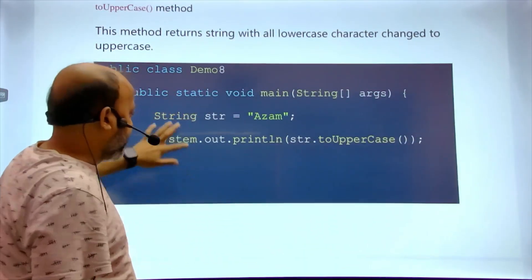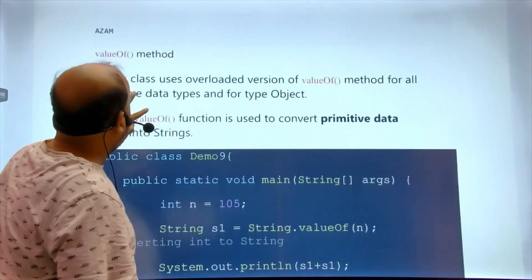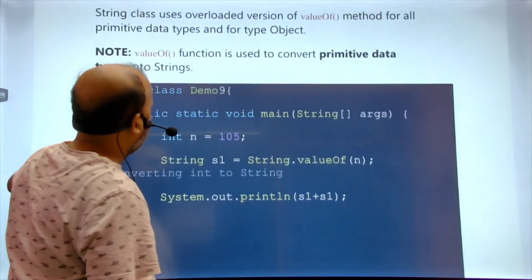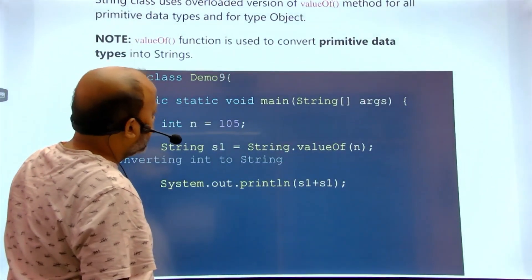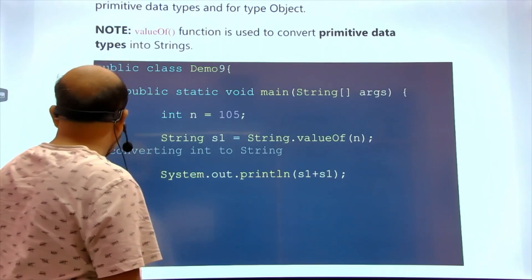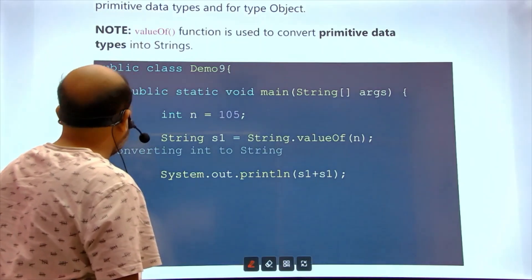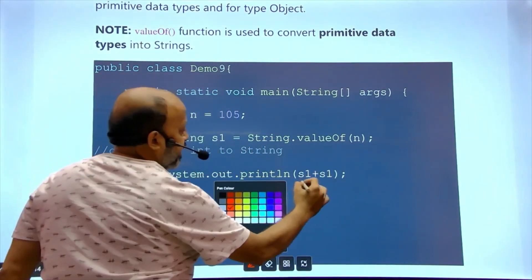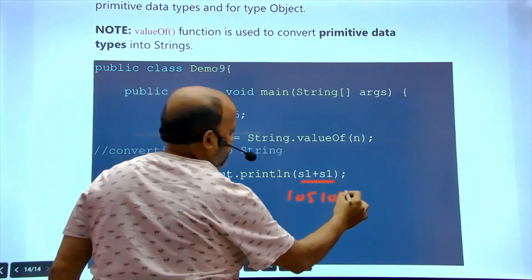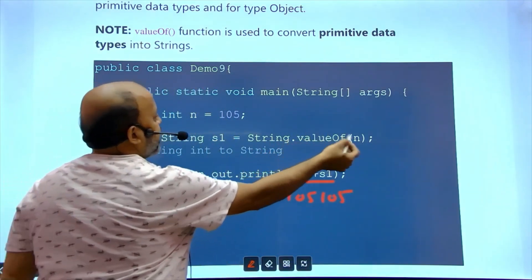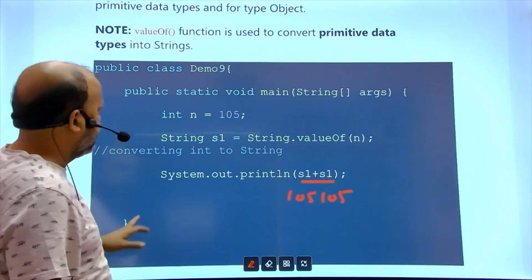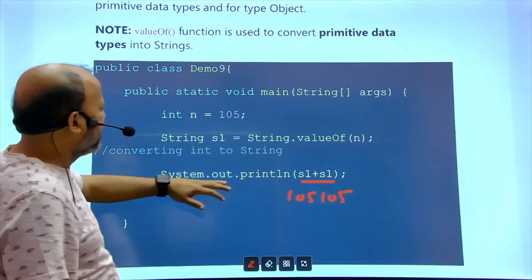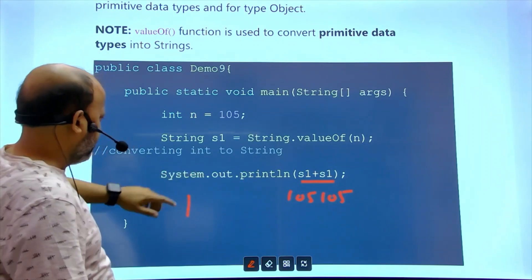Next is valueOf(). It converts an integer — or any number, even float — to a string. For example, if my number is 105 and I convert it using String.valueOf(), then printing s1 + s gives '105105' because the number has been converted into a string.